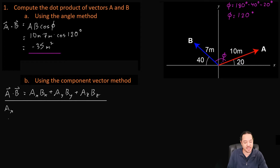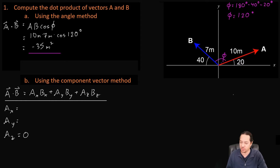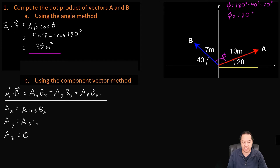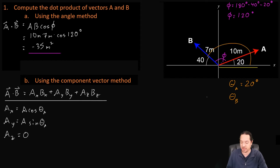Let's find the components AX, AY, and AZ. AZ we know is going to be zero — A is in the XY plane. For the AX component, it's going to be equal to A cosine of theta, and we'll call this theta A. AY is going to be A sine of theta A. Theta A is 20 degrees — that's this angle right here. We're also going to have a theta B, which is the angle to vector B, and that is going to be equal to 180 degrees minus 40, so theta B equals 140 degrees.